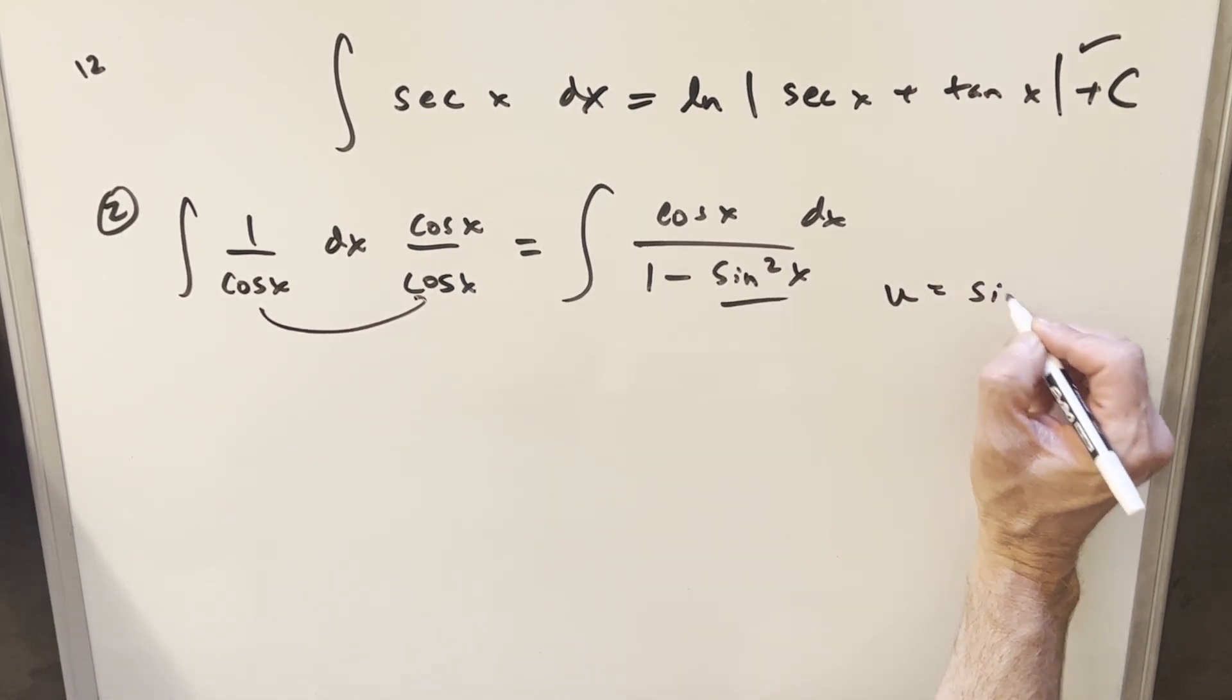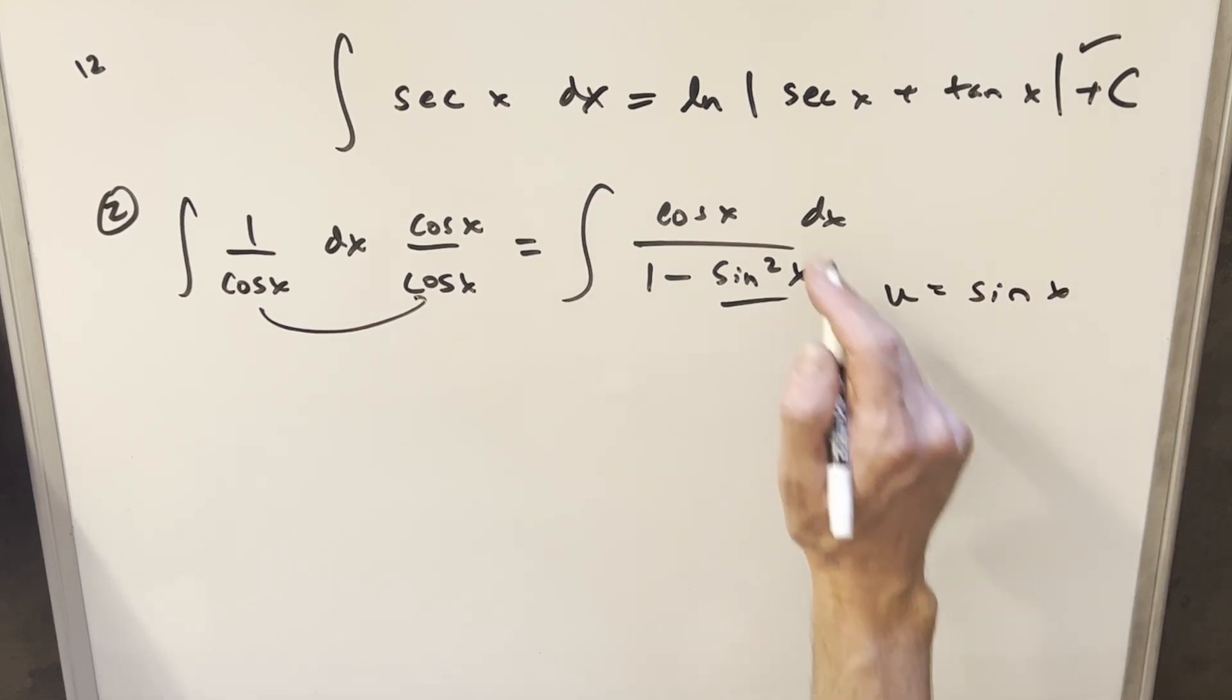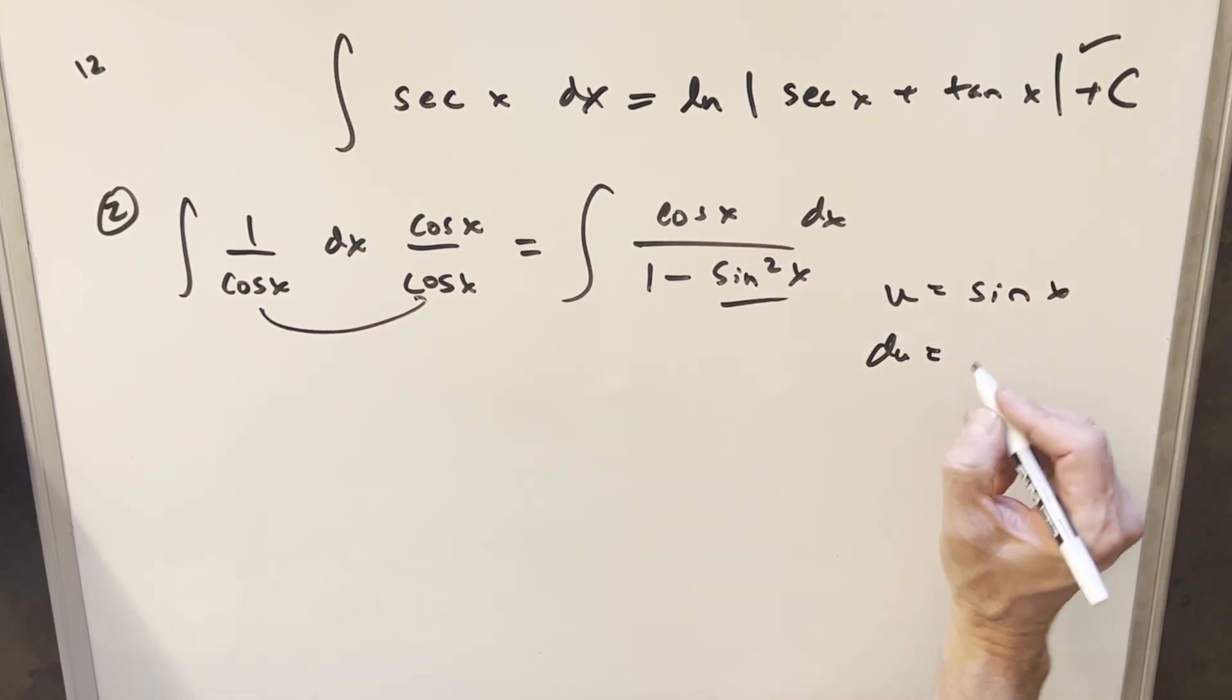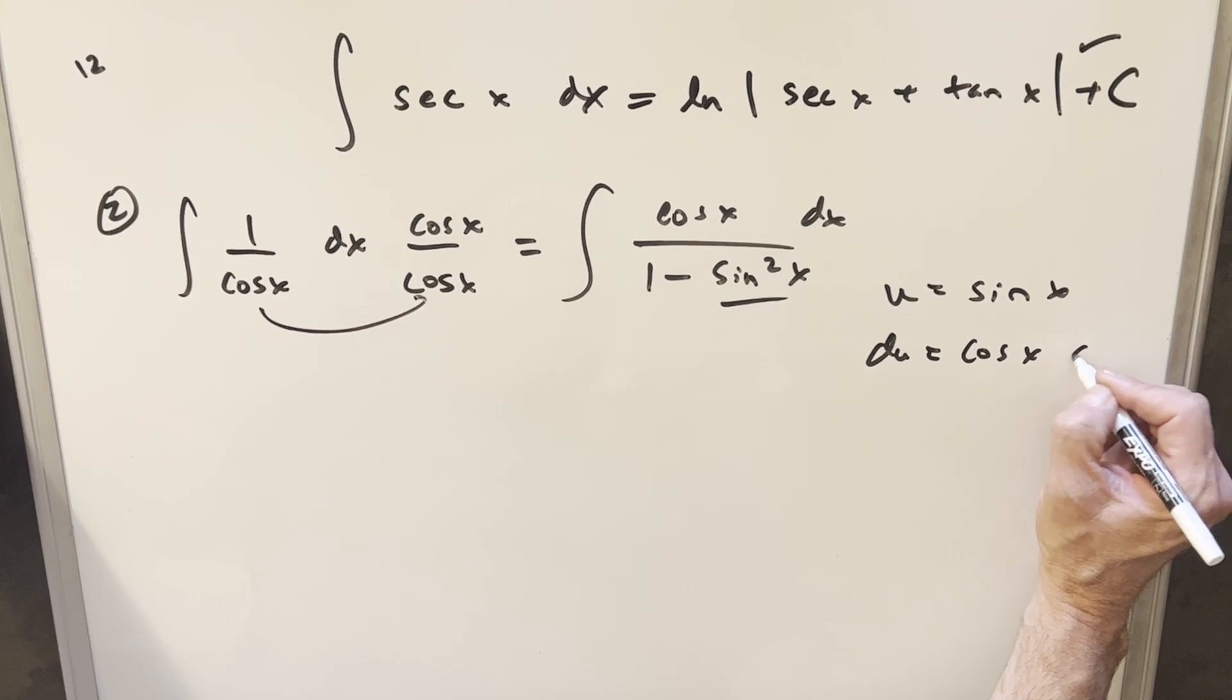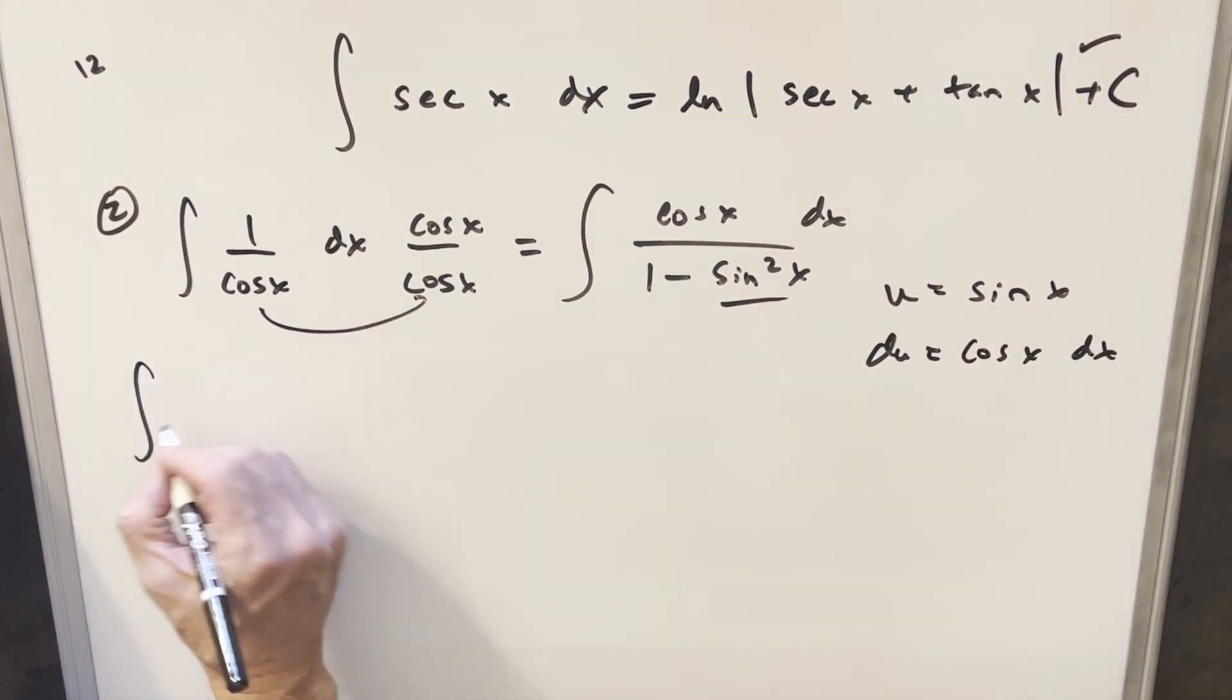We want our u to be just sine x, and then we're set up here where our du is gonna be cosine x dx, and then we'll just substitute. So we'll just have our du in the numerator, and now we're gonna have 1 minus u squared here in the denominator.